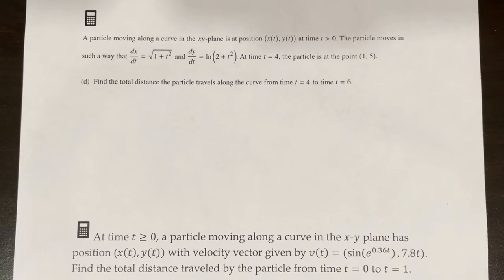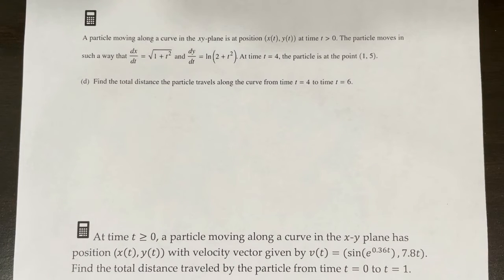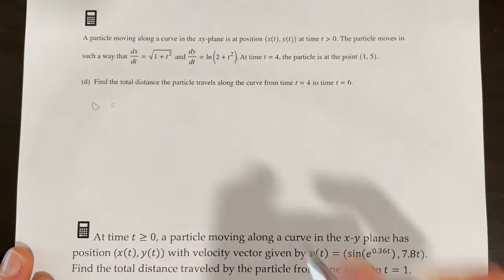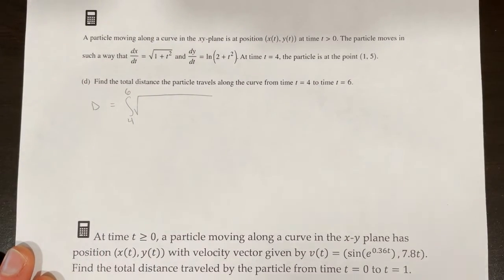Now let's work through part of a calculator free-response question. A particle moves in the xy-plane with dx/dt = √(1 + t²) and dy/dt = ln(2 + t²). At t = 4 the particle is at (1, 5). Part d asks for the total distance the particle travels from t = 4 to t = 6. The distance equals the arc length, so we use the integral from 4 to 6 of √[(dx/dt)² + (dy/dt)²] dt.